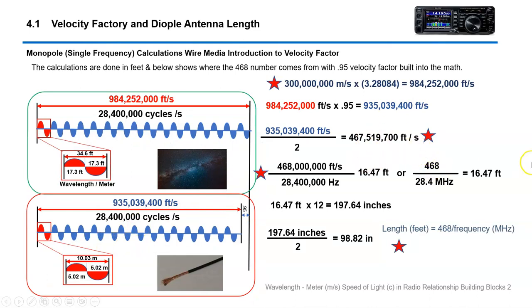This is where the 468 number comes from. You take 300 million meters per second, convert it to feet, add the velocity factor for a dipole wire, divided by 2. Then you end up with your factor of 468, which is a number we're all familiar with. You divide 468 by the frequency in megahertz to get the feet of the entire dipole. Multiply that times 12, and then divide it by 2, and you have the individual length of each dipole wire on the antenna.